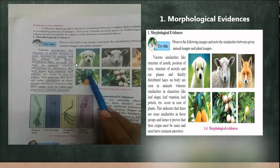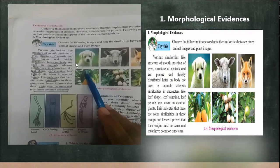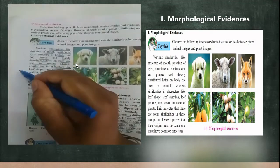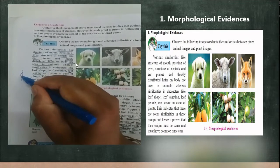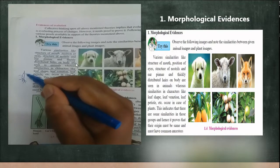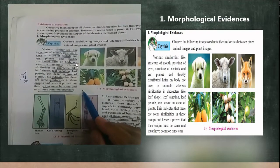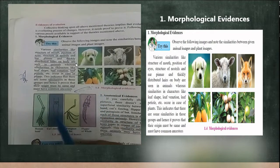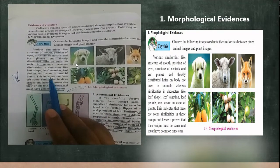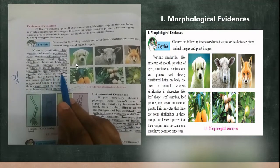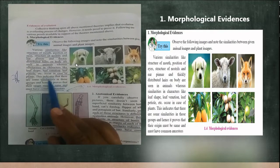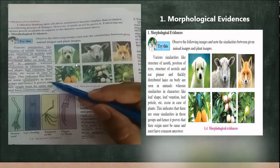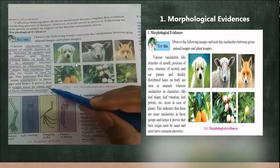Similarly, if you see the characters in plants like shape of leaves and venation — the marks on leaves — there are two types: reticulate venation, where a single primary vein has secondary and tertiary veins branching from it, and parallel venation, as seen in sugarcane or maize leaves. The similarities in characters like leaf shape, venation, and petiole indicate that plants belong to the same group.